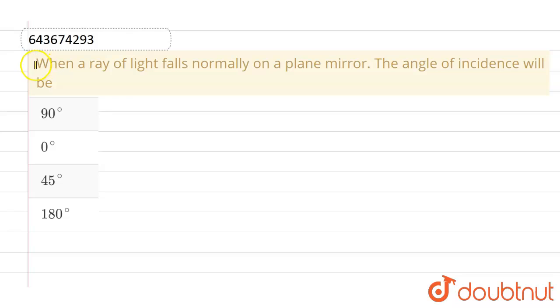Hello everyone. If we talk about this question, the given question is: when a ray of light falls normally on a plane mirror, the angle of incidence will be? The given options are 90 degrees, 0 degrees, 45 degrees, or 180 degrees.